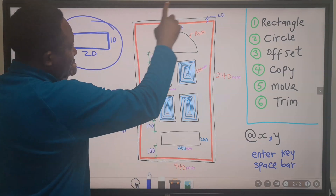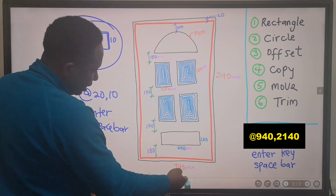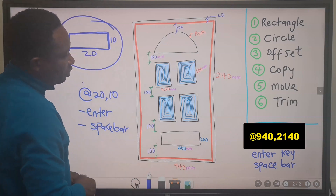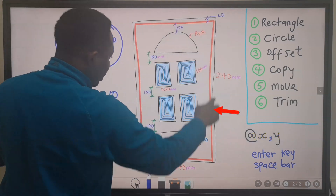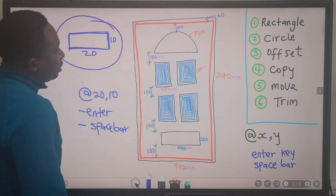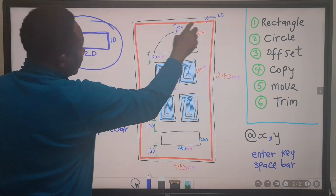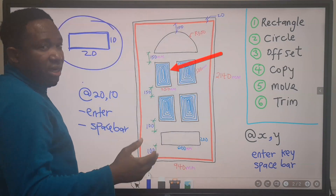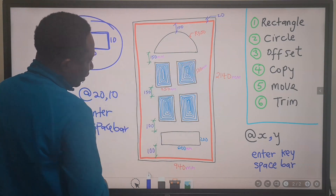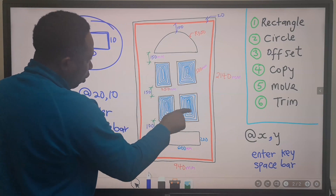We are going to start by drawing out the bigger rectangle at 940 by 2140 millimeters. We will press Enter and get this outer shape. Next, we are going to use Offset to offset this line inside by 20, and we are going to get the red thicker line. Next, we are going to draw a rectangle which is 250 by 500.